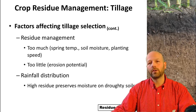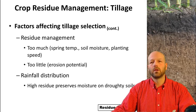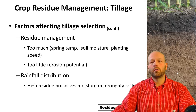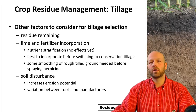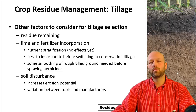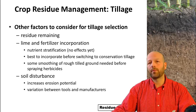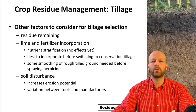Too little residue on the soil surface can also lead to issues with erosion. Other factors affecting tillage selection include the amount of residue remaining, which goes back to the crops in your rotation. Also consider whether you need to incorporate lime, fertilizer, or manures — some tillage equipment is better equipped for those types of jobs.